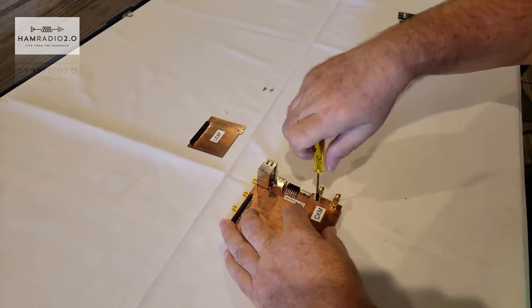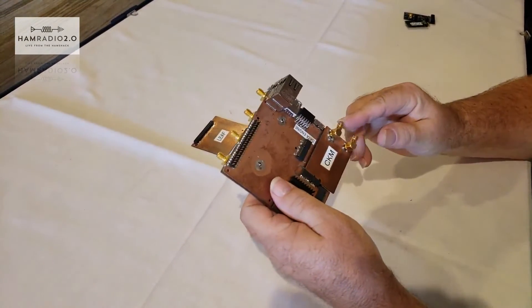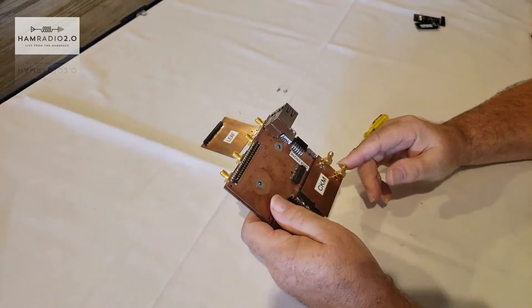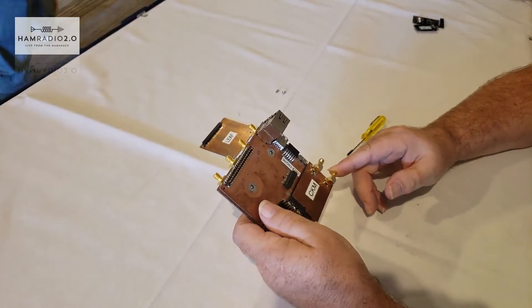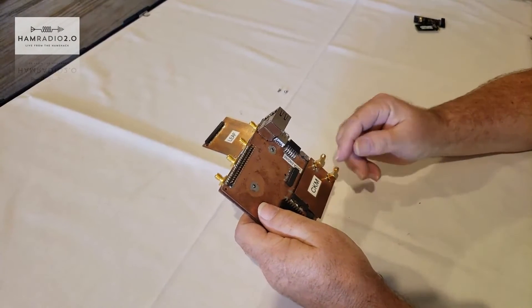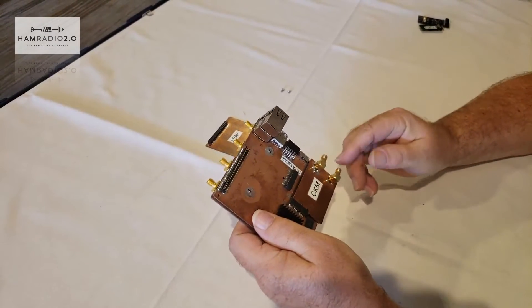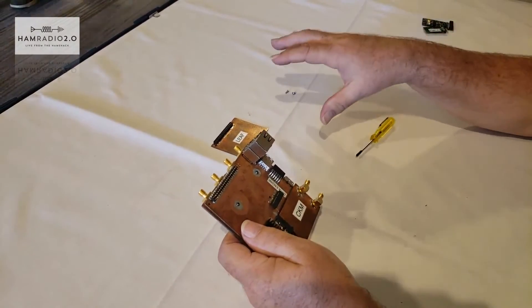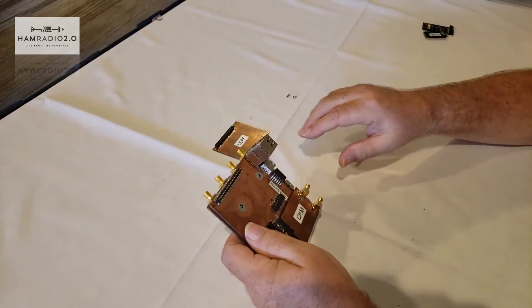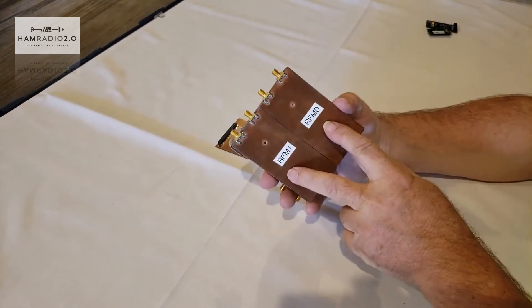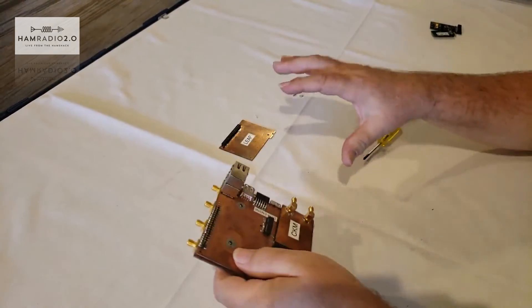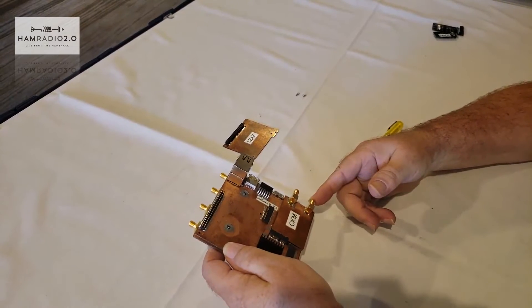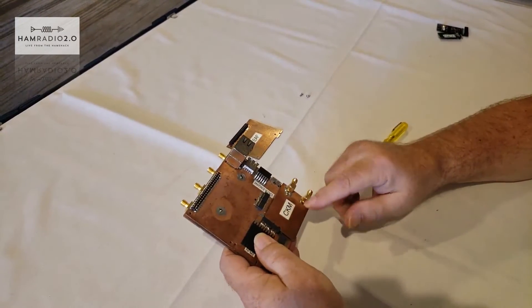The clock module will have a GPS antenna for the GPS DO and a reference input in case you have a high dollar rubidium standard more accurate than the clock module. You can also feed a common clock into multiple data engine RF module assemblies and synchronize them all together. You can have two boards which is four channels clock synchronous, or eight channels clock synchronous by synchronizing them with this external input.